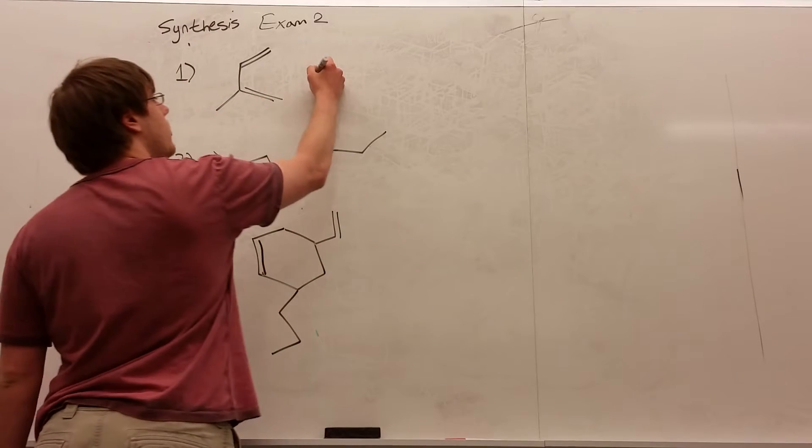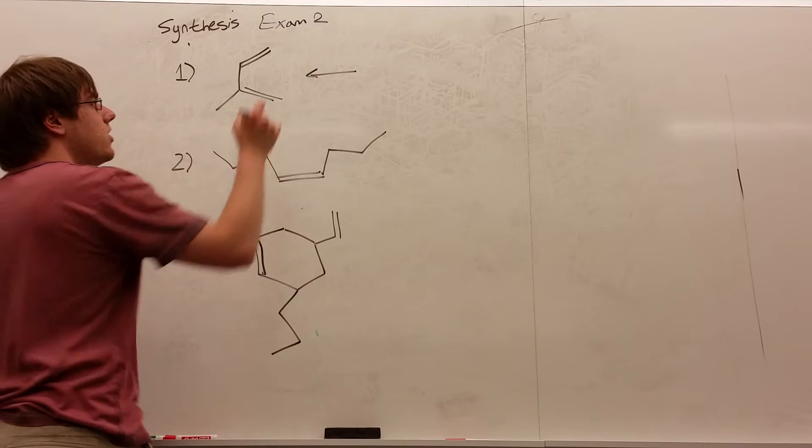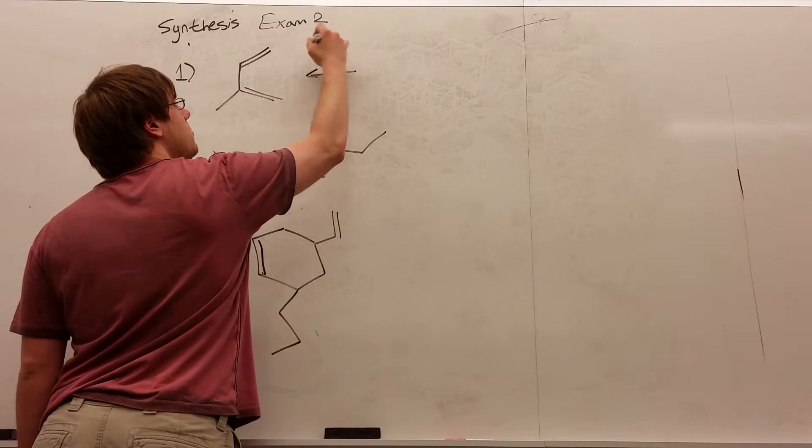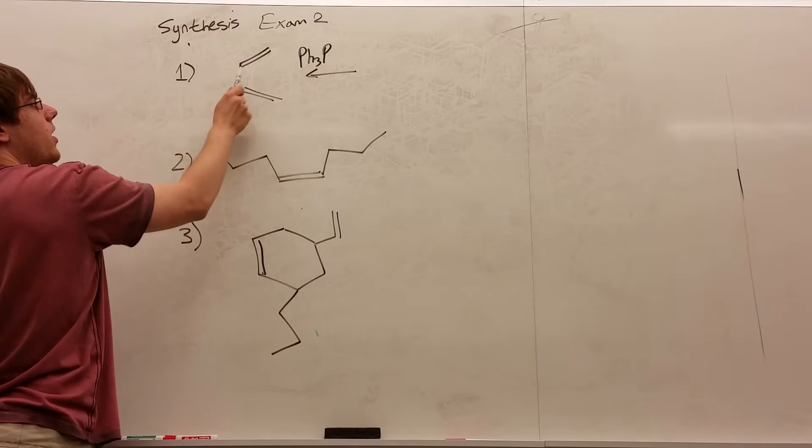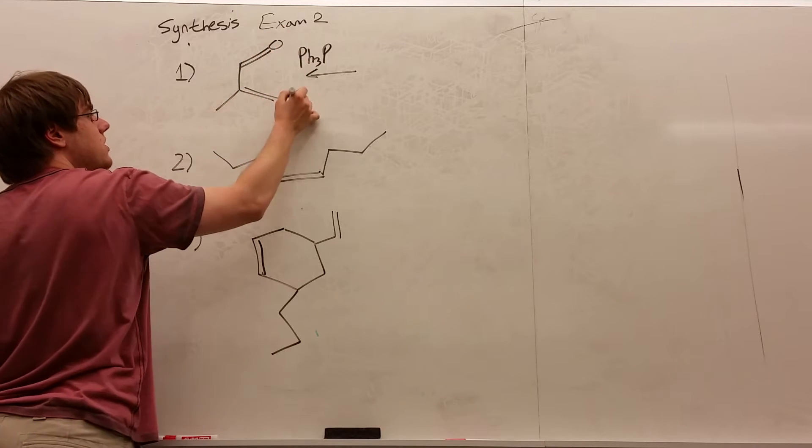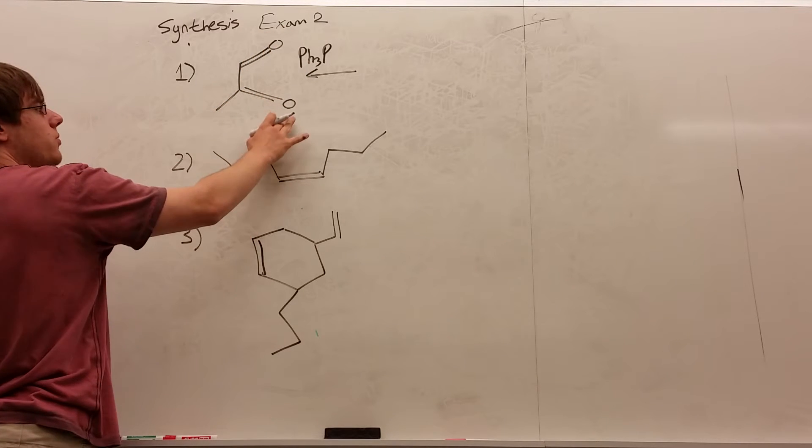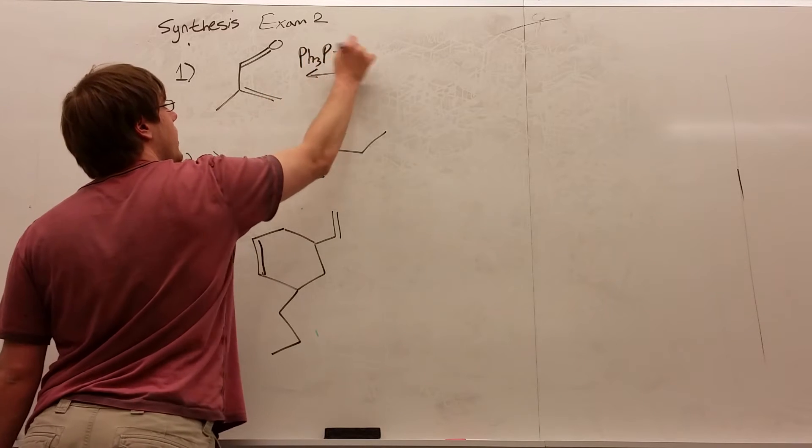If this is all I have to work with, all I have to do is use the Wittig reaction. I could do PPH3, and I look, here is my double bond. I want to go backwards, so going backwards usually it's like this, because all I'm doing is replacing the O with whatever carbon is attached to this phosphorus by a double bond.